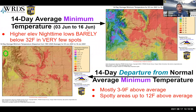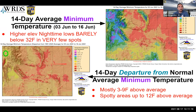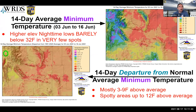Now we'll look at minimum temperature over the last two weeks — nighttime elevations. Very few spots still looking at nighttime lows below 32. Out in the plains we're seeing up into the mid-50s, upper 50s, even lower 60s in some places for average minimum temperatures over that two-week period. The temperature in terms of departure from average shows most areas are three to nine degrees above average, with a few spotty areas looking at 12 degrees above average or more.